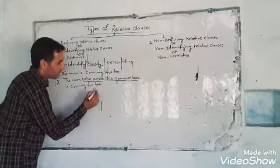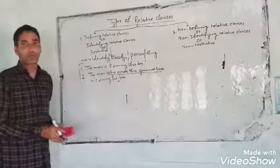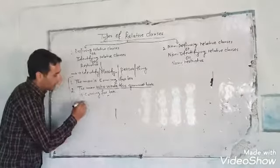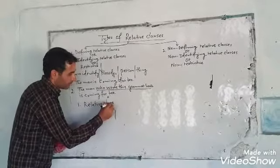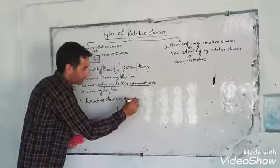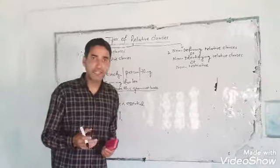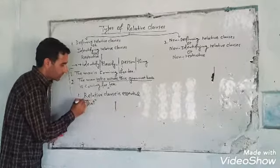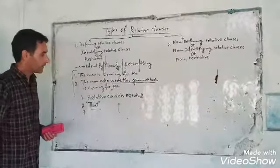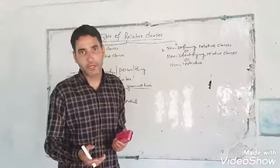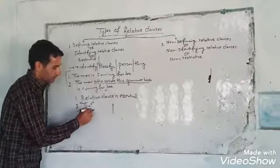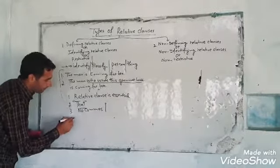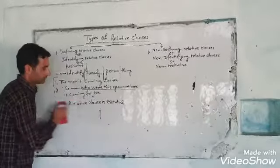The meaning is much clearer in the second sentence because we have used a relative clause. In the first sentence we don't know which man is coming for tea. In defining relative clauses, commas are not used — we don't use any comma in defining relative clauses.